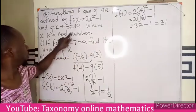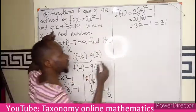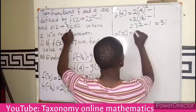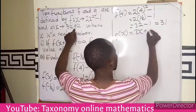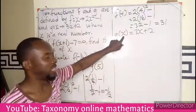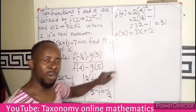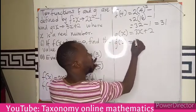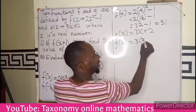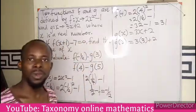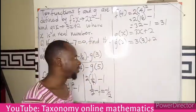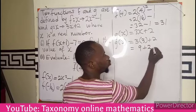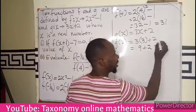Now we move to the function g of x, which is 3x plus 2. If I'm looking for the image of 3, it means g of 3 equals 3 times 3 plus 2 — wherever I see x, I replace with the image. This gives me 9 plus 2, and that ends up giving us 11.